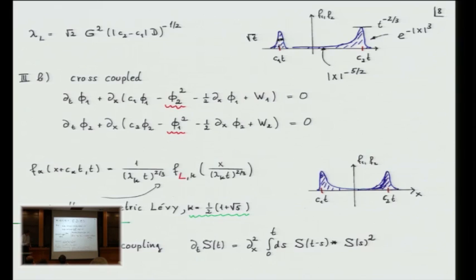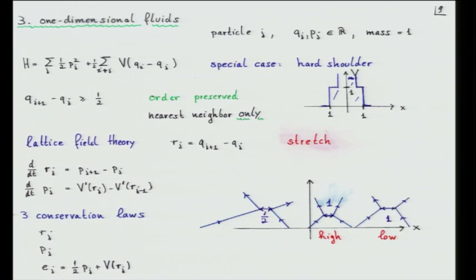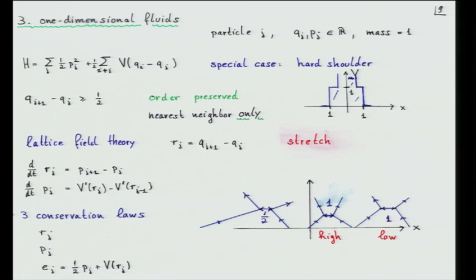Now I promised to continue with the fluids. Here are my one-dimensional fluids. These are classical particles on the line with position and momentum, mass equal to 1. The interaction potential is the hard shoulder potential — a step sitting at 1/2, and then the potential goes up to infinity. The ordering is preserved and the minimal distance between neighboring particles is exactly 1/2. The potential is arranged so there's interaction only between nearest neighbors, which simplifies things enormously.